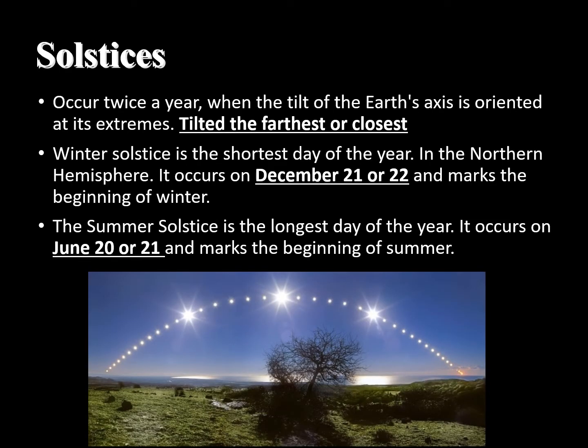Solstices occur twice a year, when the tilt of the earth's axis is oriented at its extremes. The winter solstice is the shortest day of the year in the northern hemisphere — it occurs on December 21 or 22 and marks the beginning of winter. The summer solstice is the longest day of the year, occurring on June 20 or 21, and marks the beginning of summer.